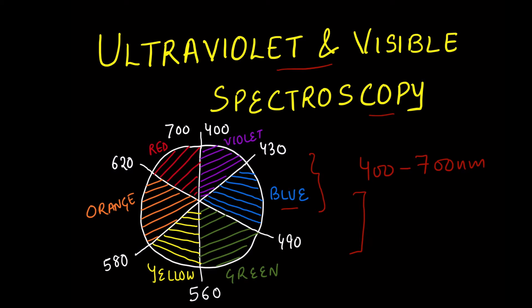For instance, plants appear green. Why? Because the chlorophyll present in plants absorbs the red region. Once the red region is absorbed, the corresponding observed colour is green, which is opposite to the red region — and that's why plants appear green.